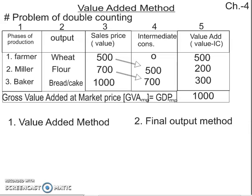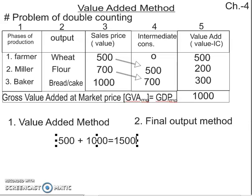But here is the problem. The wheat was 500 rupees, and the bakery made a 1,000 rupee cake. If we add these two together, we get 1,500 rupees, which is totally wrong. Because wheat is already included within the 1,000 rupee bread. This is exactly the problem of double counting.